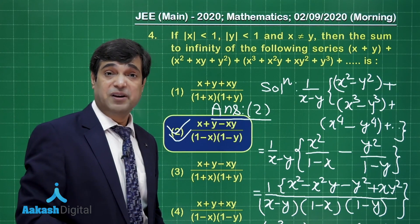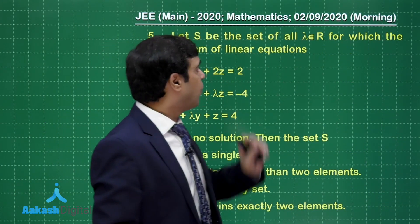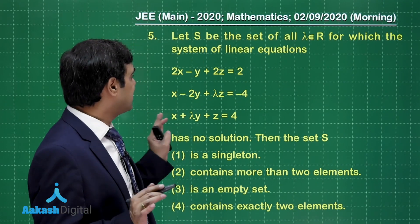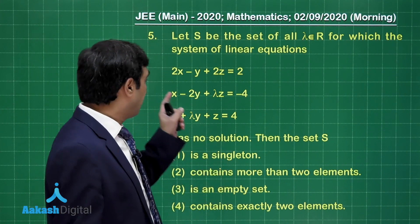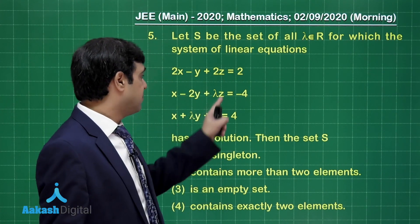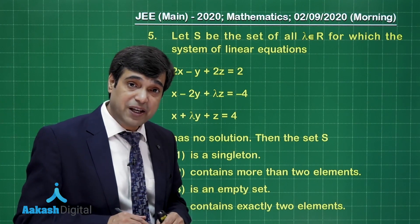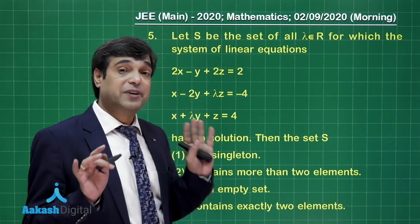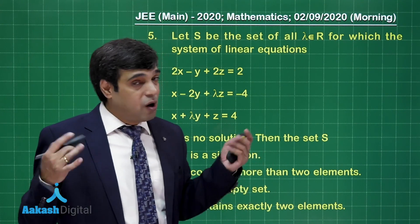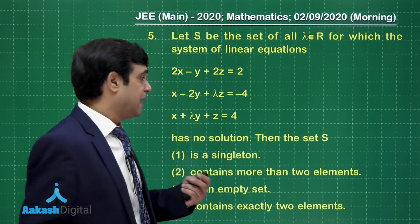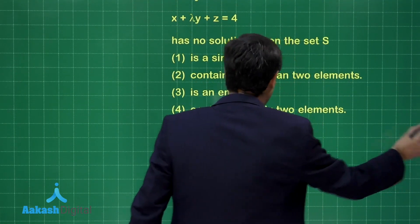Moving to question number 5: let S be the set of all lambda for which the system of linear equations has no solution. Option one: find the determinant of the coefficient matrix and get values for lambda, then check whether we get a solution or it becomes inconsistent. Option two: use the concept of the augmented matrix.